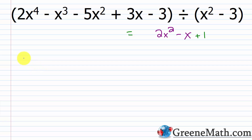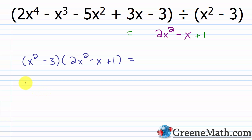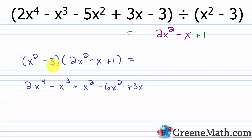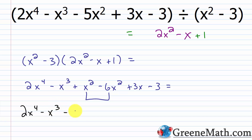Let's check this. We have x squared minus 3 multiplied by 2x squared minus x plus 1. x squared times 2x squared is 2x to the fourth power, x squared times negative x is minus x cubed, x squared times 1 is plus x squared, negative 3 times 2x squared is minus 6x squared, negative 3 times negative x is plus 3x, and negative 3 times 1 is minus 3. Combining like terms: x squared minus 6x squared is minus 5x squared. Result: 2x to the fourth power minus x cubed minus 5x squared plus 3x minus 3 — exactly what we started with as our dividend.